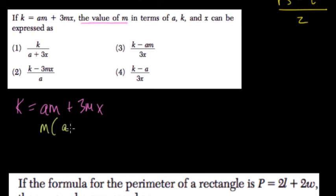So it's m times a plus 3x. All I'm doing there is saying m times a is am, m times 3x is 3mx, and now I'm almost done.